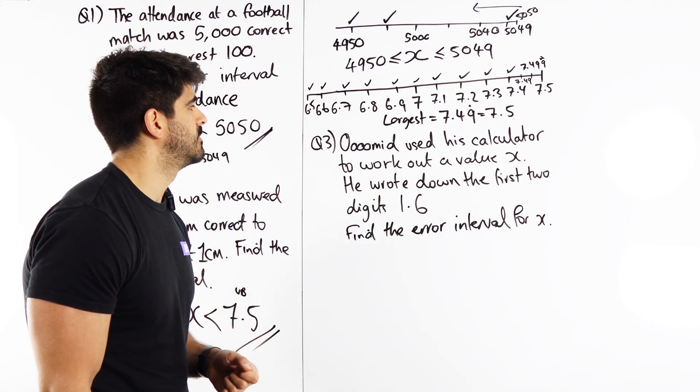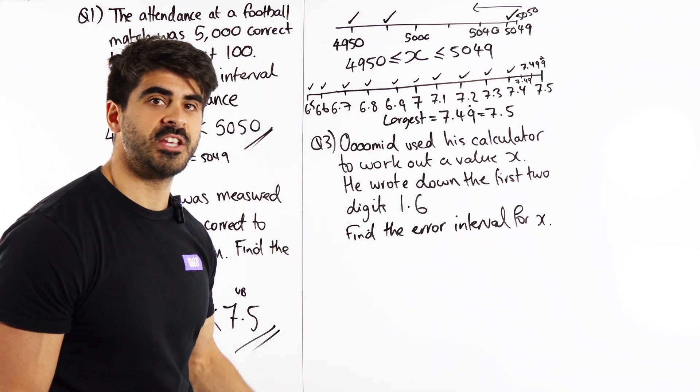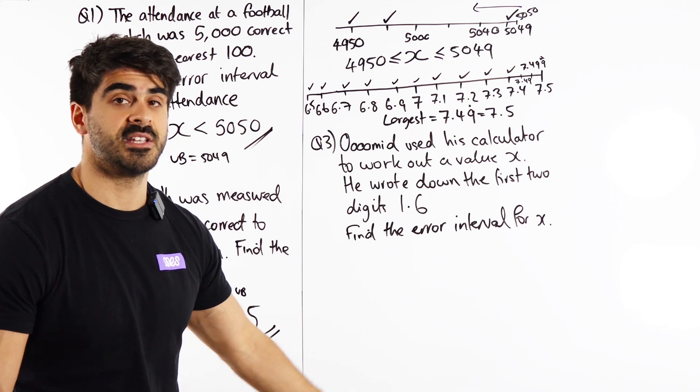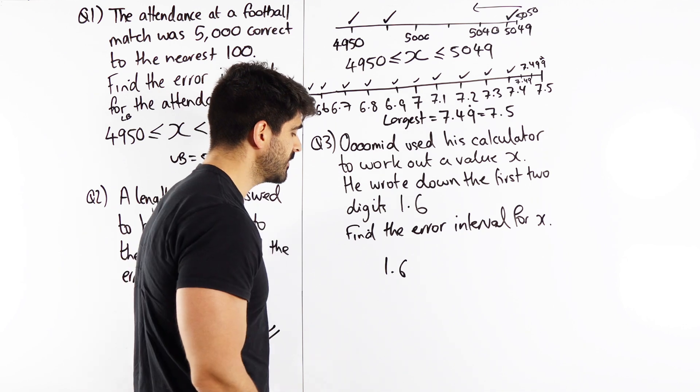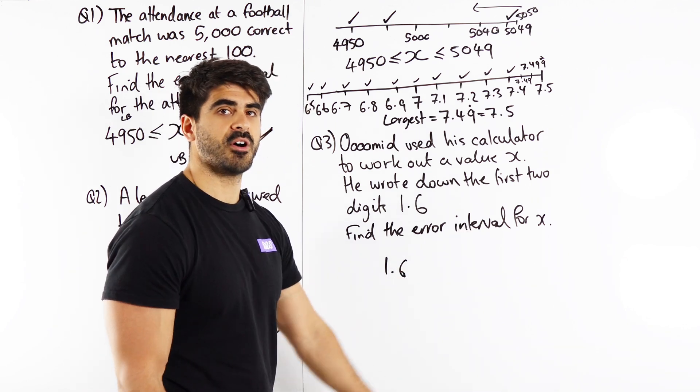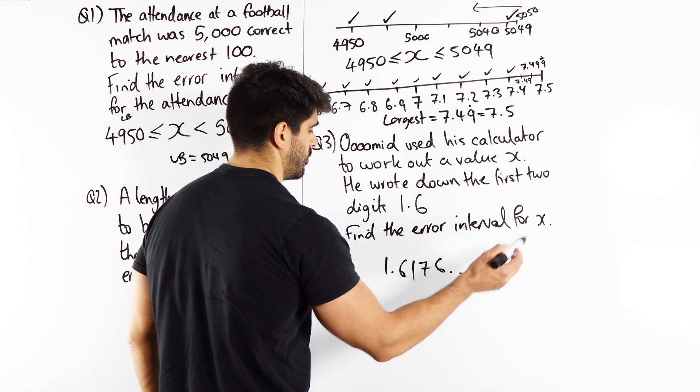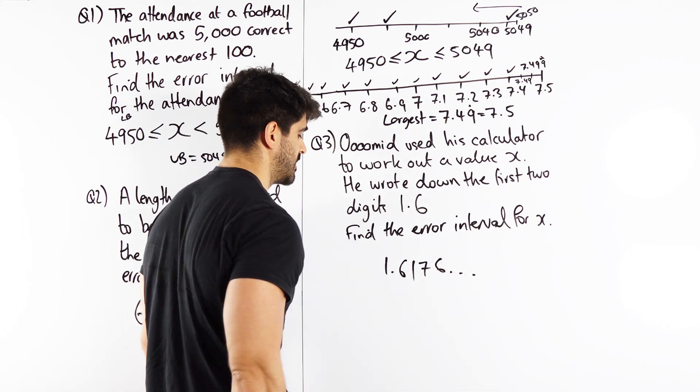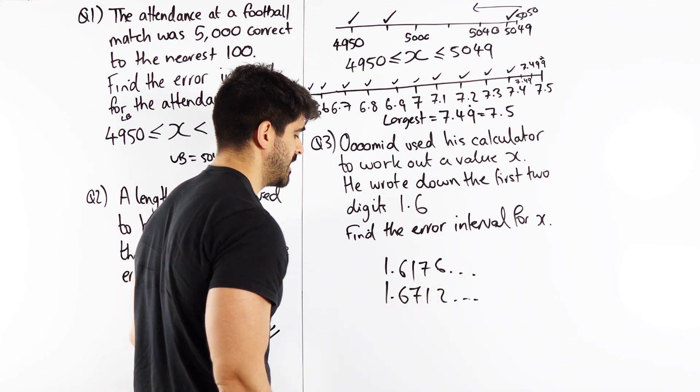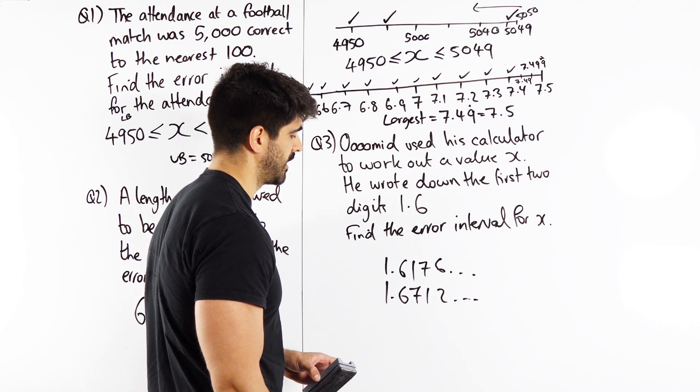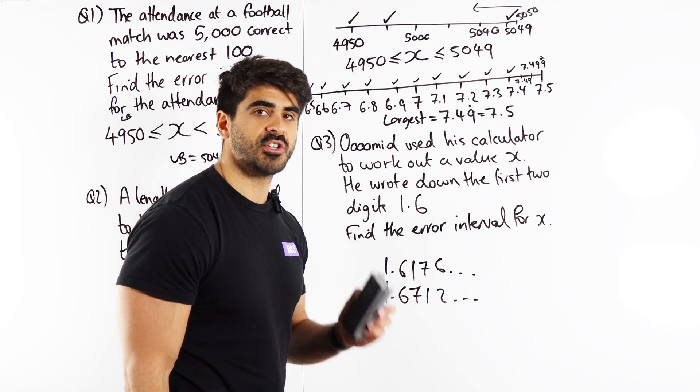Now what's interesting here is Umid has not actually rounded anything. He's just written down what numbers he's seen. He saw 1.6. He didn't care what came after. It could have been 1, 7, 6, whatever. He just wrote 1.6. He could have read 1.6, 7, 1, 2, etc. He still would have just written 1.6. Now what type of rounding is this? It's known as truncation.